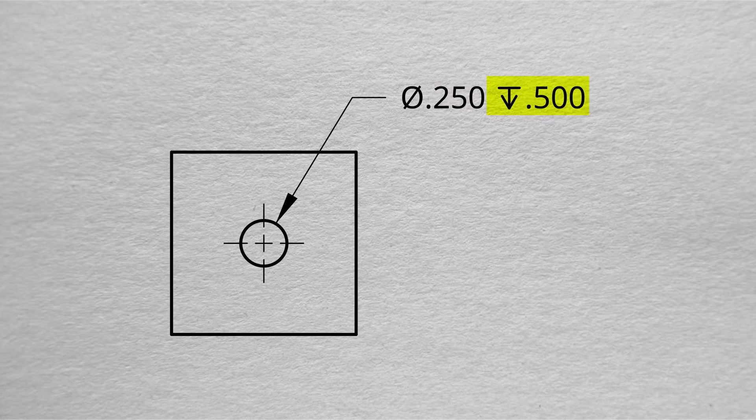We're given a little bit more information that we need to digest. We're given a line with an arrow pointing down. That indicates the depth of the hole that's being drilled. In this case, the number that shows is 0.500, or a half inch drilled directly down. So we can see the diameter of the circle, and then we can also see the depth of the hole itself.